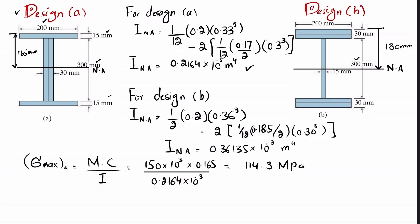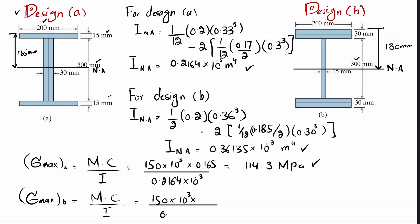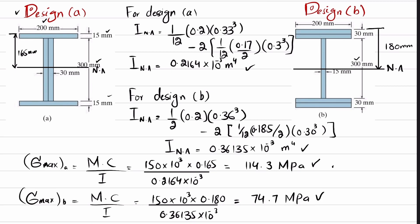Now we calculate maximum stress for Design B using the same formula: σ_B = Mc/I = (150 × 10³) / (0.36135 × 10⁻³) × 0.180 m. The distance c from the neutral axis to the top is 180 millimeters. Solving this, the stress comes out to be 74.7 MPa.